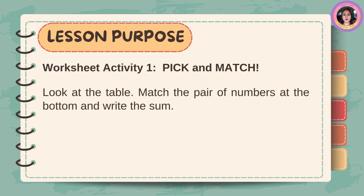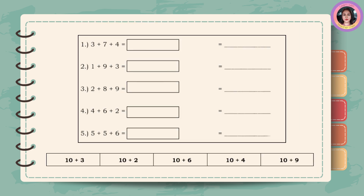Let's have an activity. Worksheet Activity 1, Pick and Match. Look at the table. Match the pair of numbers at the bottom and write the sum. Number 1: 3 plus 7 plus 4 is equal to 10 plus 4. Number 2: 1 plus 9 plus 3 is equal to 10 plus 3. Number 3: 2 plus 8 plus 9 is equal to 10 plus 9. Number 4: 4 plus 6 plus 2 is equal to 10 plus 2. Number 5: 5 plus 5 plus 6 is equal to 10 plus 6.